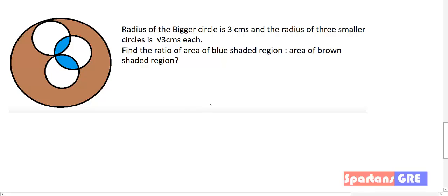In this question, the radius of the bigger circle is 3 centimeters, and all the smaller circles are equal, each having a radius of √3 centimeters.